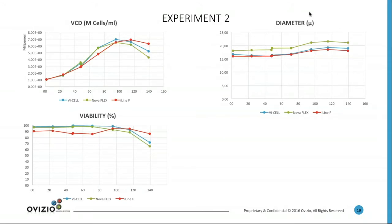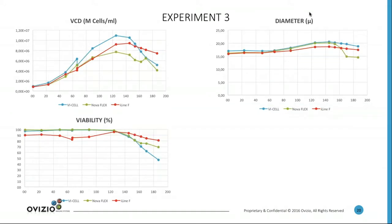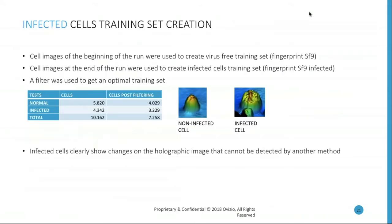Everything was very comparable for all three parameters. In the last two experiments we added the Nova Flex as well, and showed the same trend lines and more or less the same results for all three experiments. Then we started creating the training set to define the non-infected and infected cells. Cell images from the beginning of the run were used to create a virus-free training set, and cell images from the end of the run were used to create the infected cell training set.